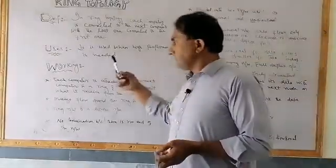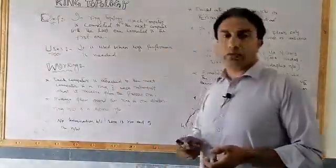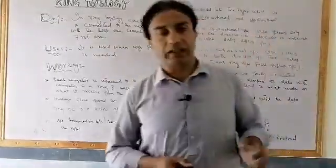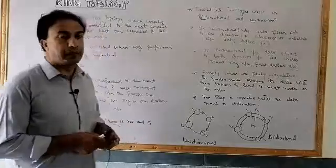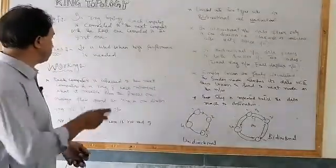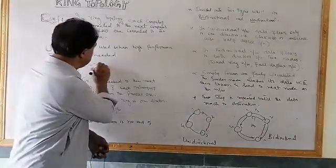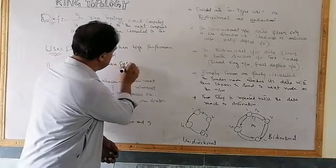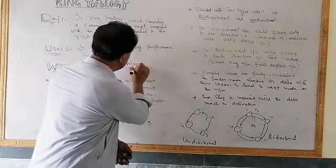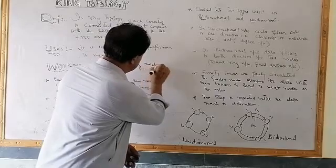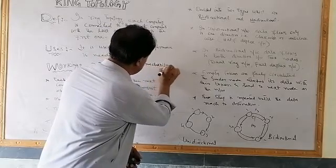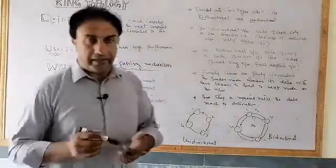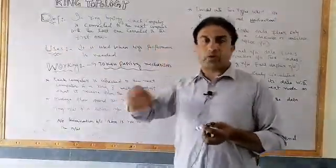What is the working of ring topology? How does it work? The working mechanism is very simple. It works on the token passing mechanism. In this network, a free token circulates continuously.